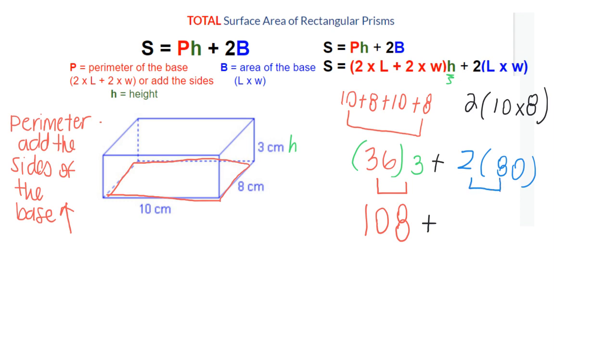And again, I'm solving this in order of operations. I'm dealing with all multiplication before I add anything together. 2 times 80 is 160. So if I add 108 and 160 together, I get 268. So my answer would be 268 centimeters squared.